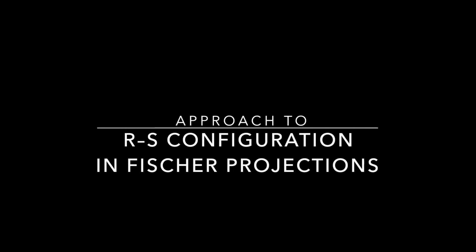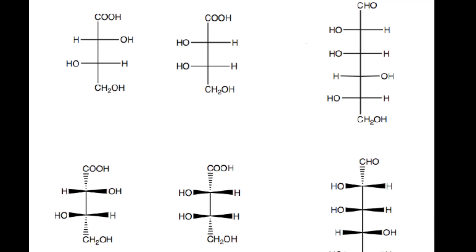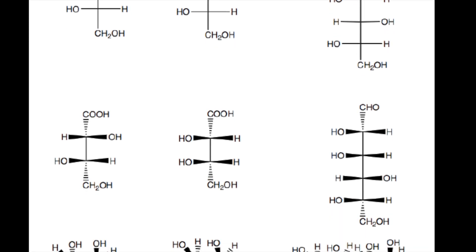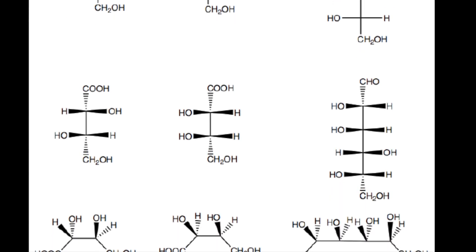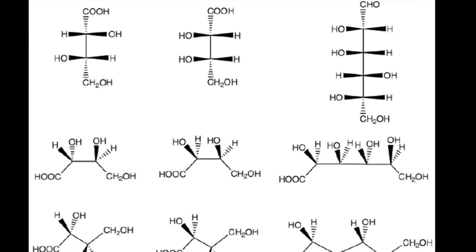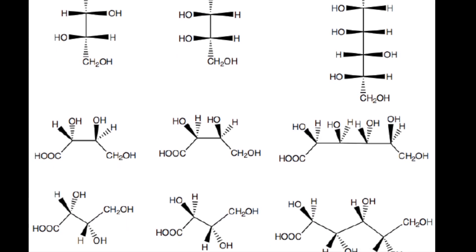Determining RS configuration of chiral compounds is easier than you think. You do not have to convert a Fischer projection into a 3-dimensional sawhorse projection — that seems like a lot of work. All you have to do is remember one thing to determine RS configuration, and I'll show you what that is.